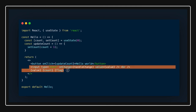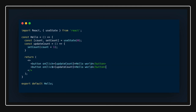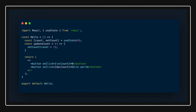Here I have another button which is decrease count. So I can have one method called increaseCount and another method called decreaseCount. The increase will be plus plus and the decrease will be minus minus.